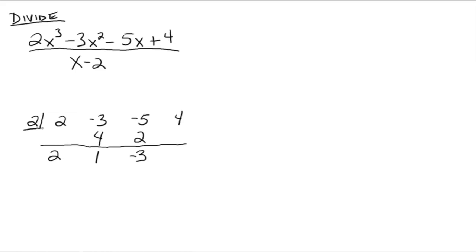Then take what's inside the box times what's below the line — that gives you negative 6. Go to the next column over and put it above the line. Add those up, you get negative 2. Now this last number here is your remainder.